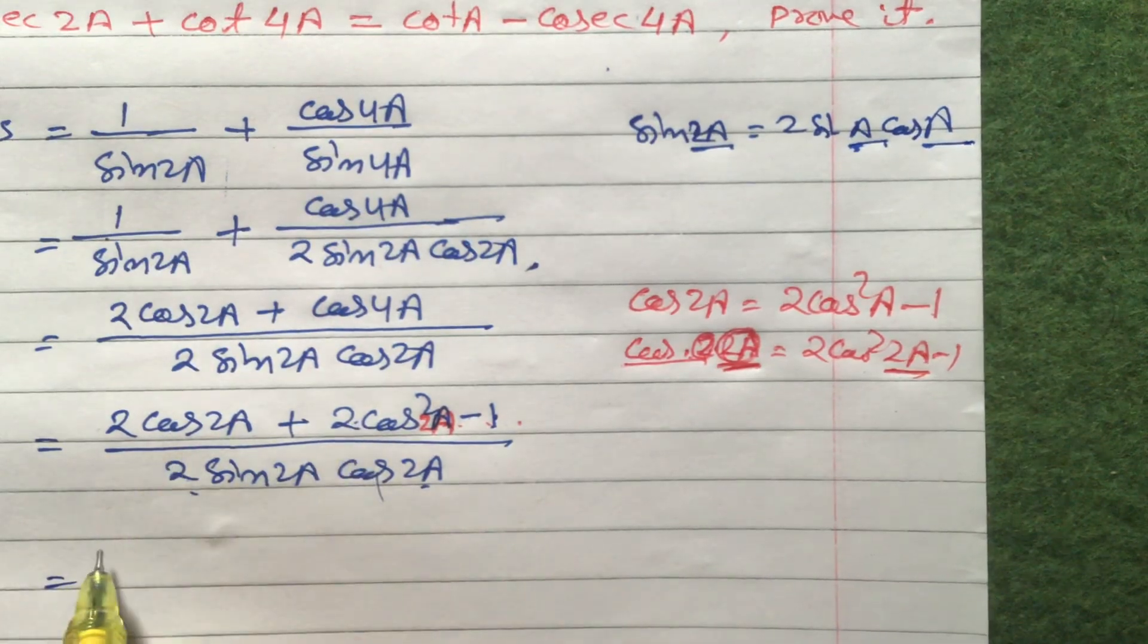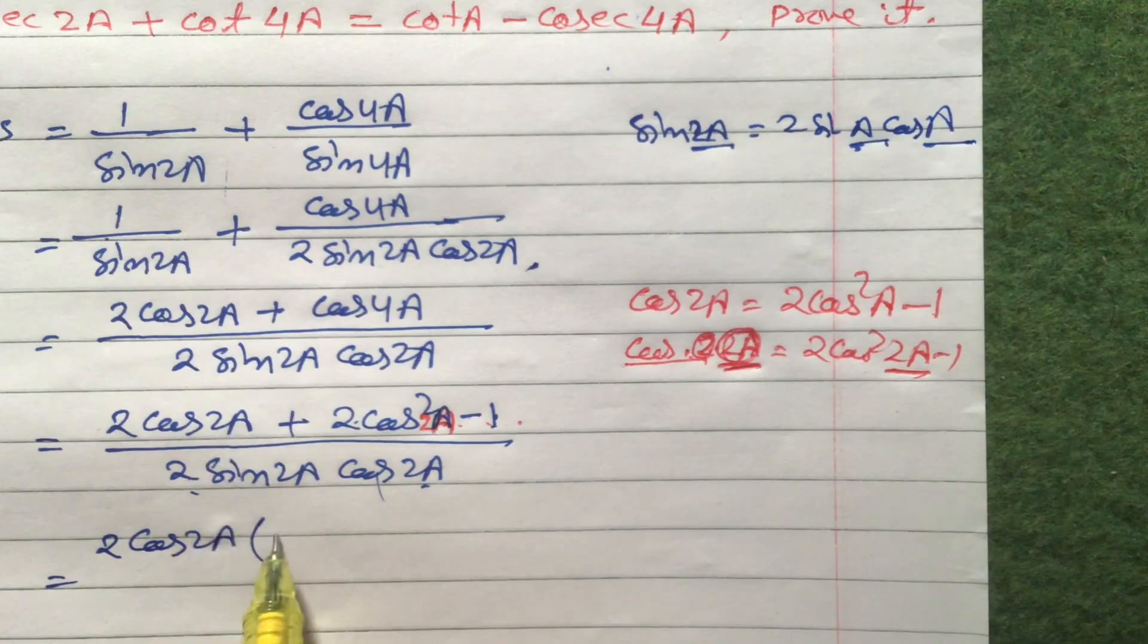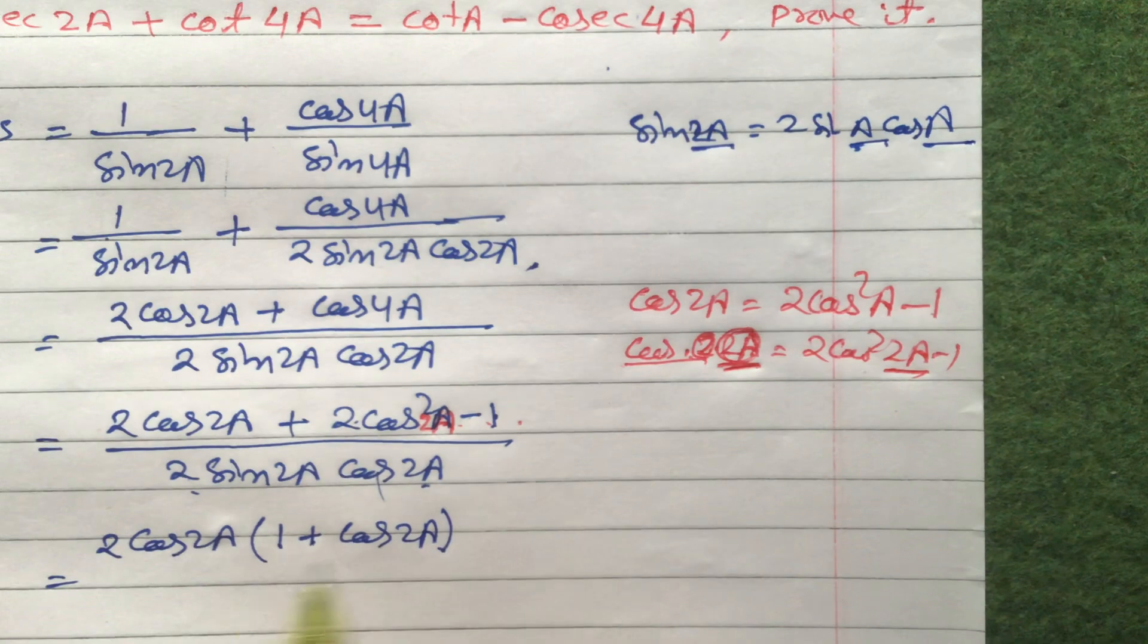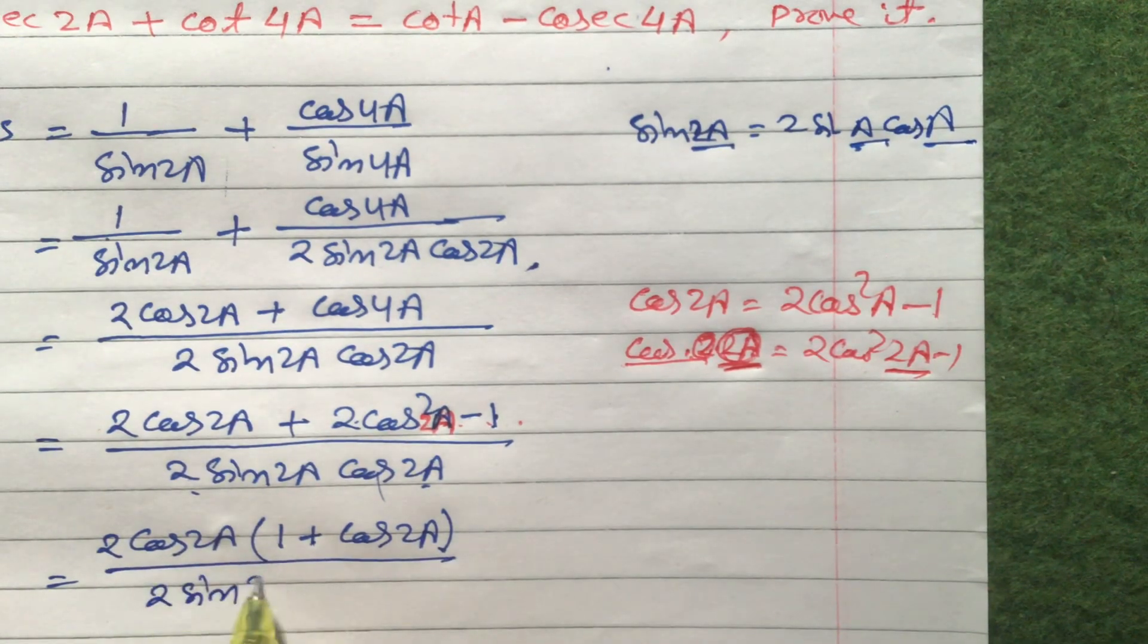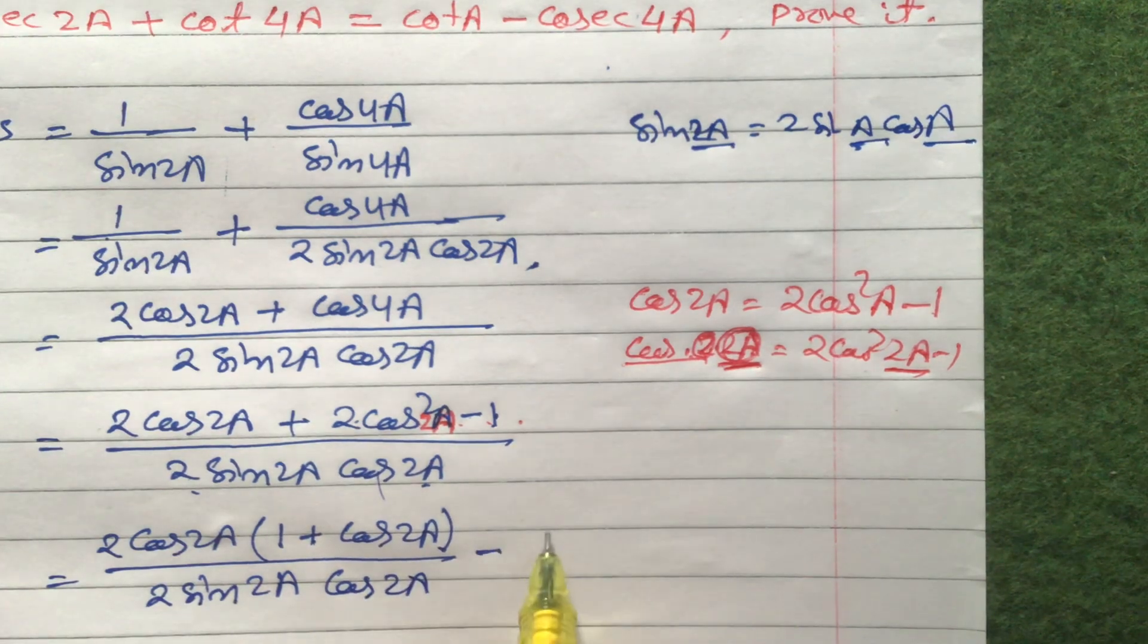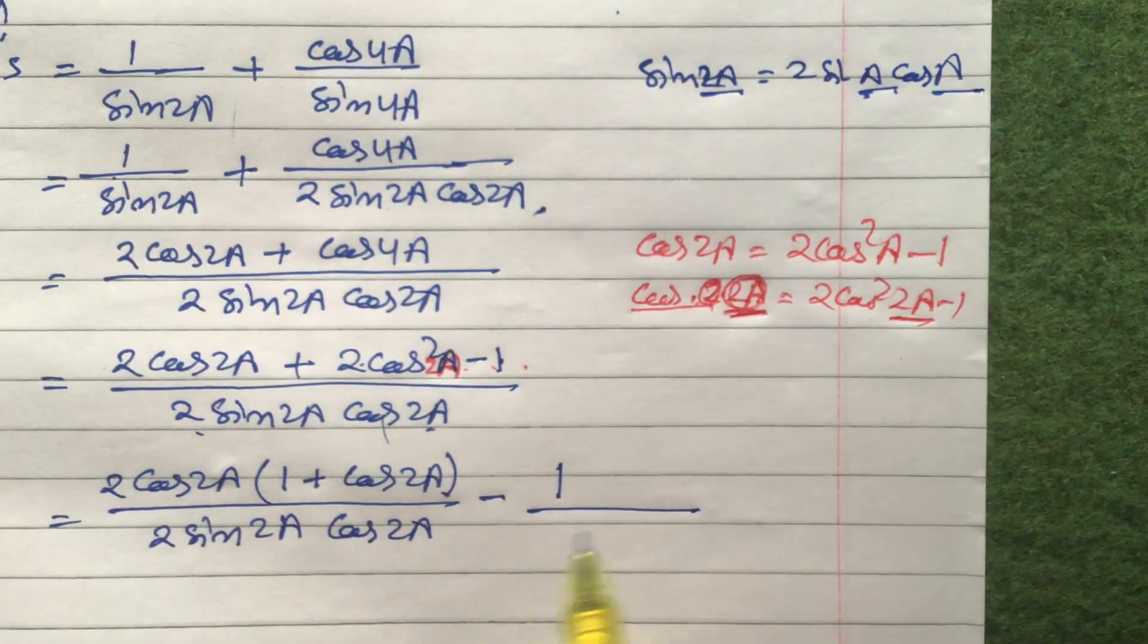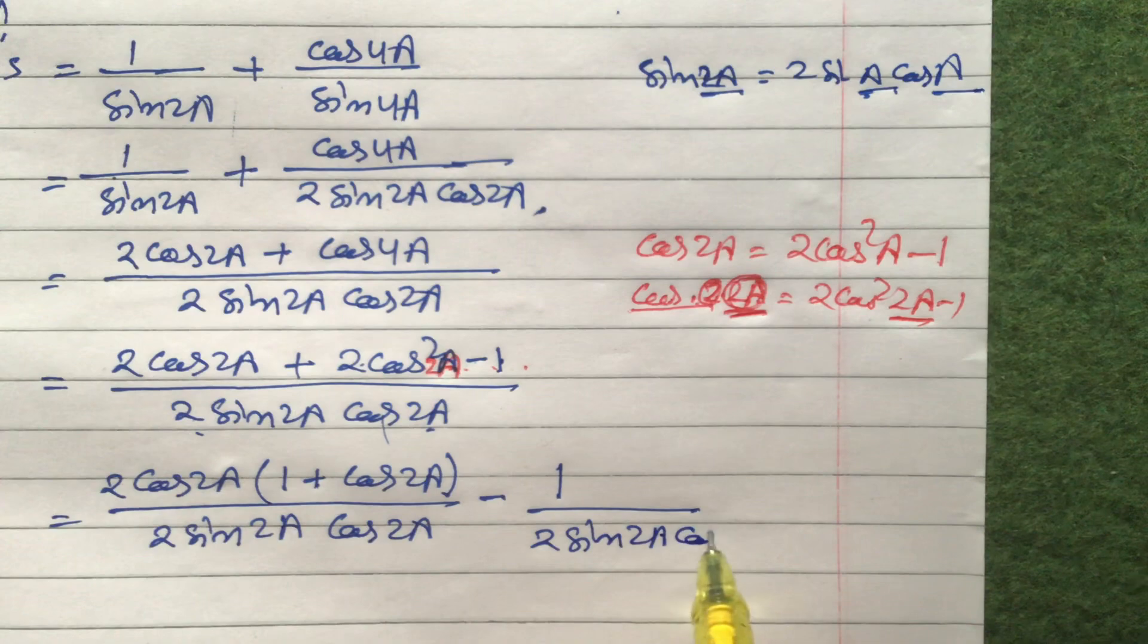So how to separate? Look at here. In these two, let us take common. 2 cos 2a is common. So here is 1 plus cos 2a we left. 1 divided by 2 sin 2a cos 2a minus 1. We will separate this one: 1 divided by 2 sin 2a cos 2a.